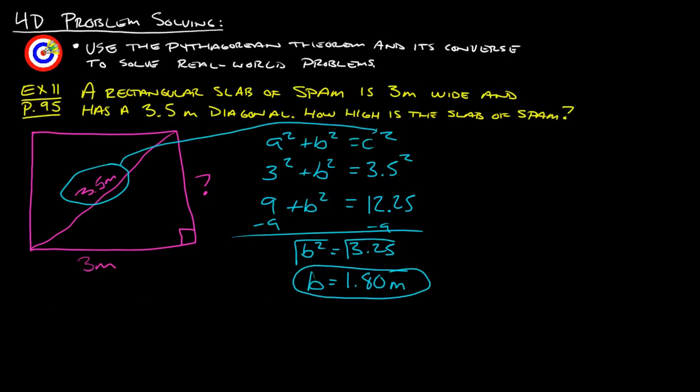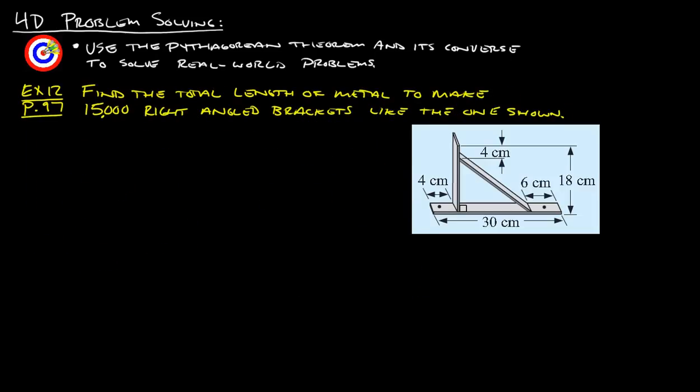Let's take a look at another example. Let's take a look at example 12. Example 12 is from page 97, and this one says find the total length of metal to make 15,000 right-angled brackets like this one shown here.